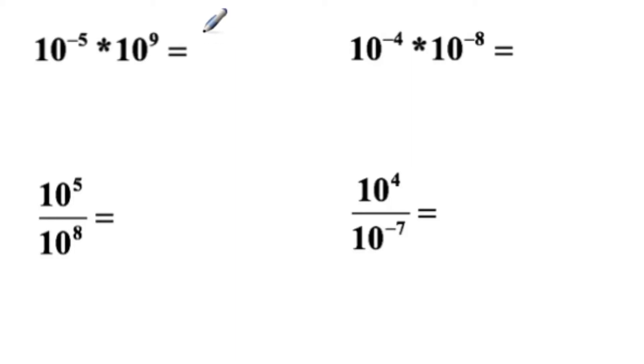So let's go through some powers of 10 calculations. When we multiply, we add the exponent, so 10 to the minus fifth times 10 to the ninth is going to be 10 to the fourth.